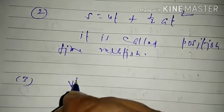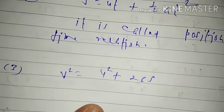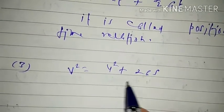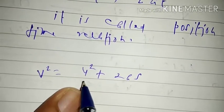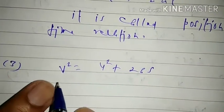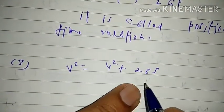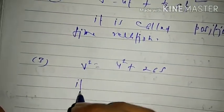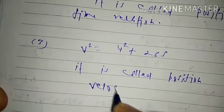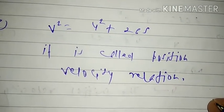The third equation, V² = U² + 2AS, has no time variable — it is free from time. If we face numericals in which time is not given, we use this equation. It relates initial velocity U, final velocity V, acceleration A, and distance S. It is therefore called the position-velocity relation.